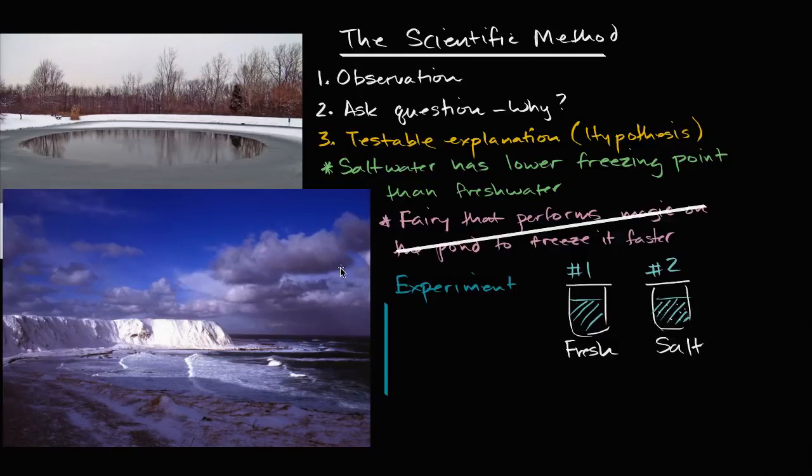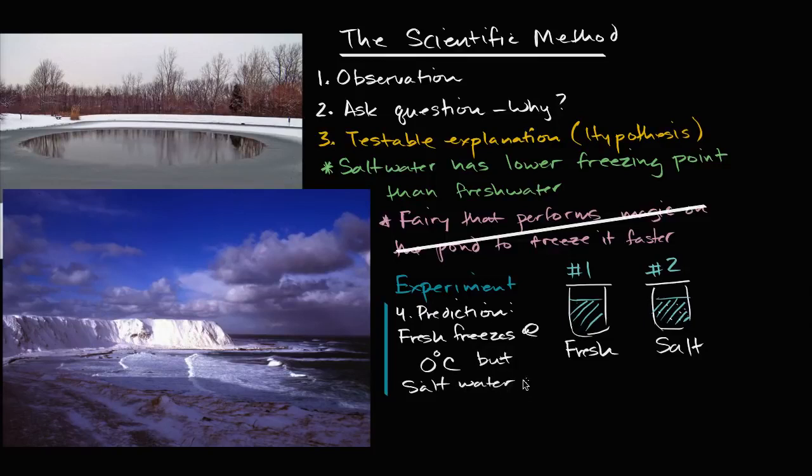And then we would make a prediction. Our prediction: we predict that the fresh water will freeze at a higher temperature than the salt water. So the prediction is the fresh freezes at zero degrees Celsius, but salt water doesn't.